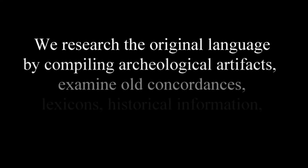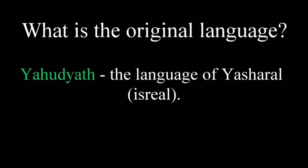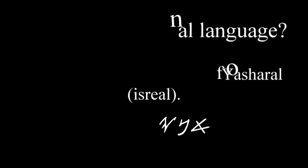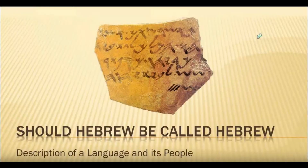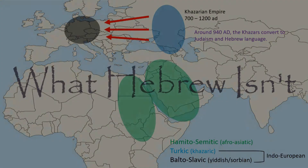We research the original language by compiling archaeological artifacts, examining old concordances, lexicons, historical information, and we cross-reference all of that using different scriptures. Now, what is the original language? It's a little-known word called Yahudyeth, and that is what people consider Hebrew — but it's not Hebrew. We examine and explore what Hebrew really means in two videos: the first one, 'Should Hebrew be called Hebrew?' and the second one, 'What Hebrew Isn't?' Please take a look at those.